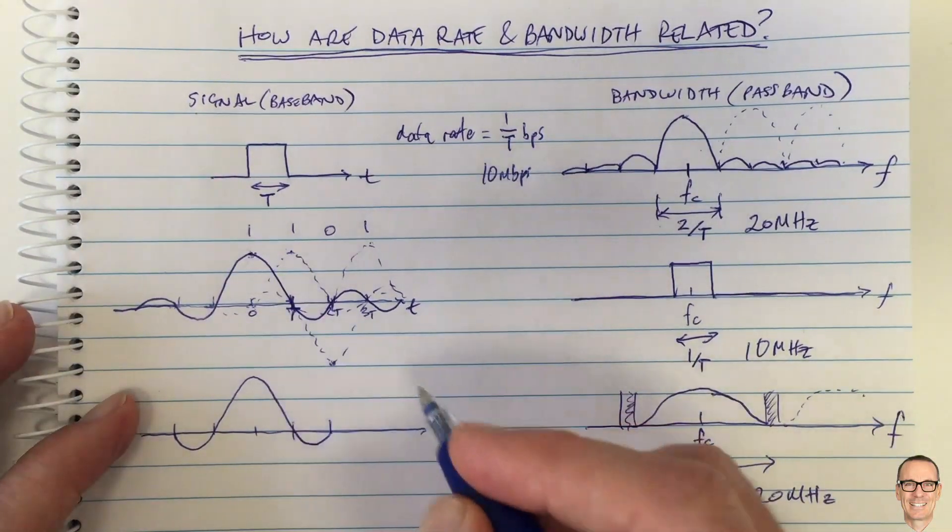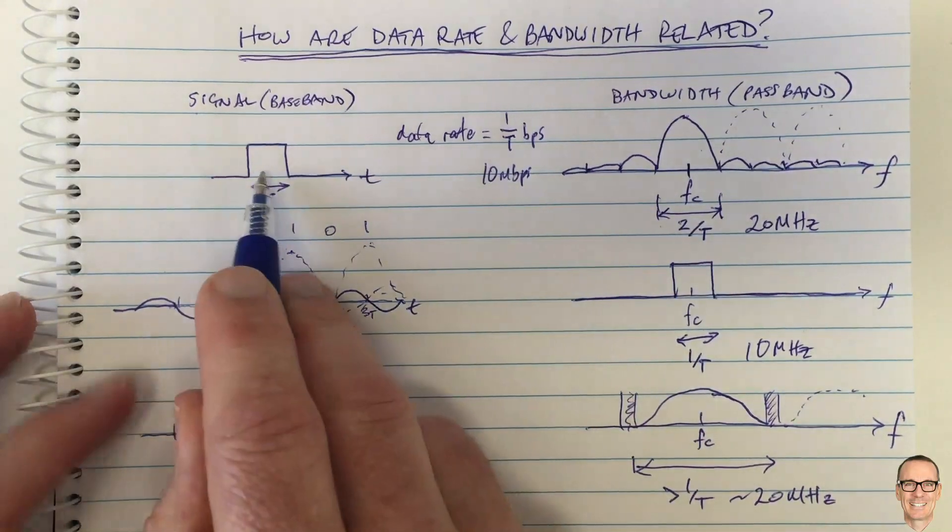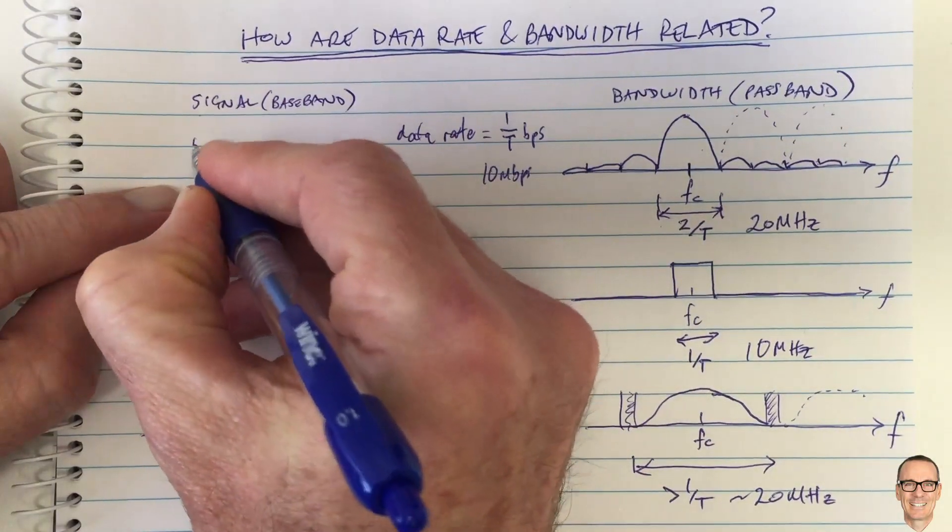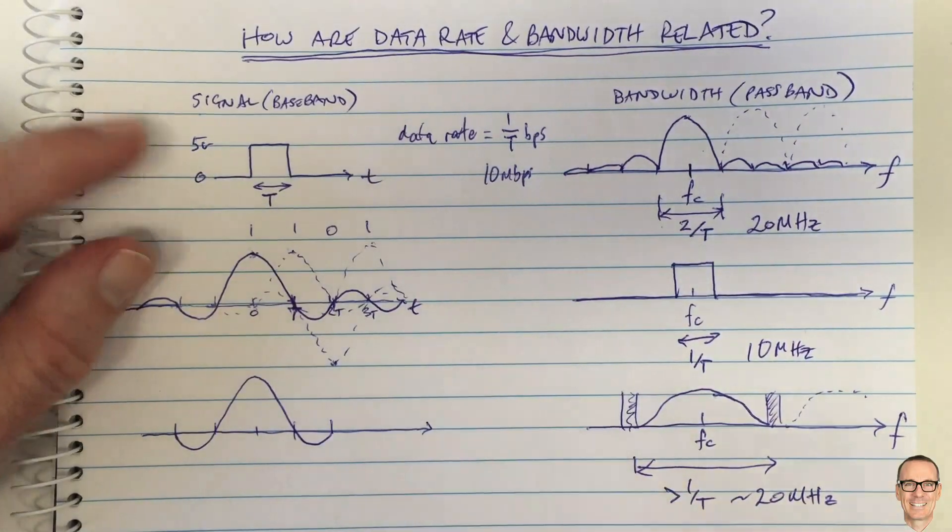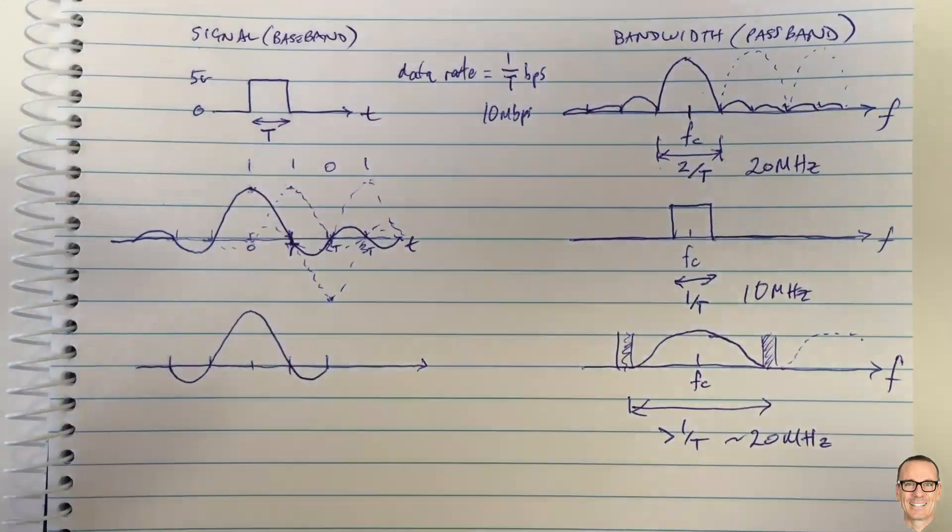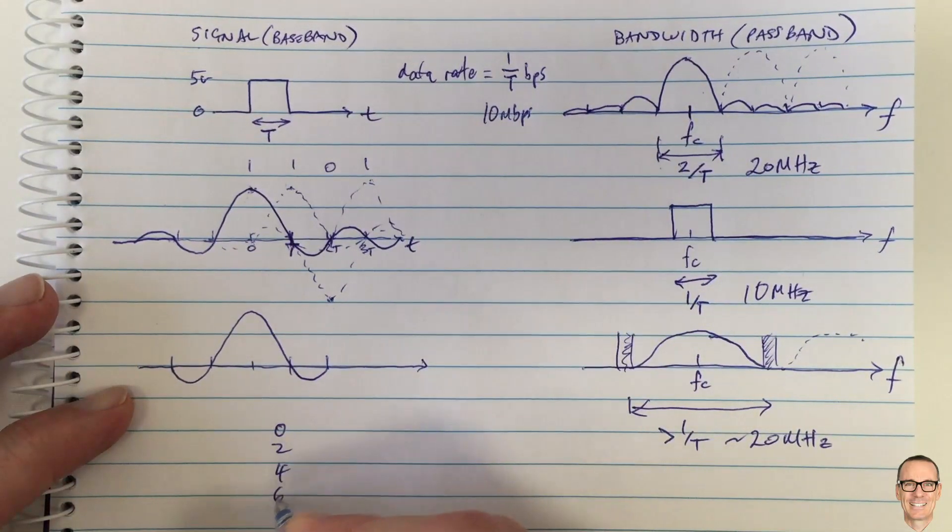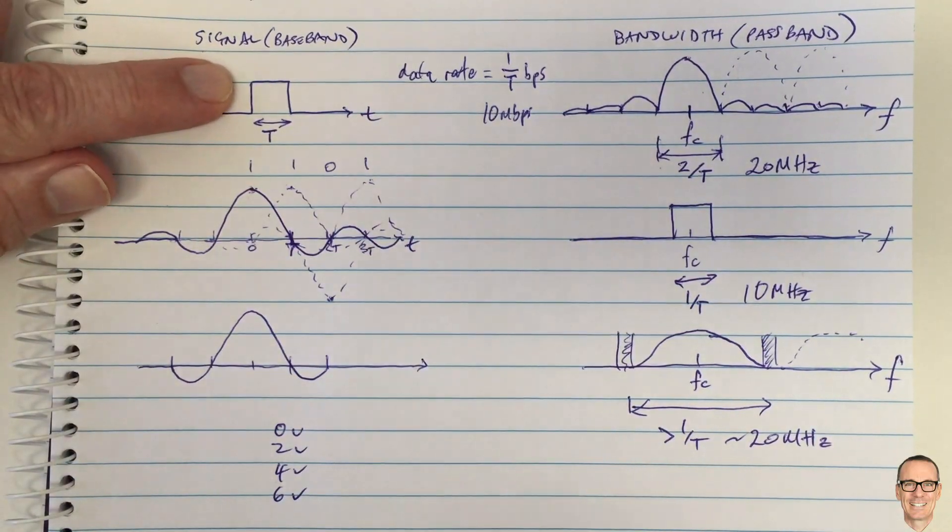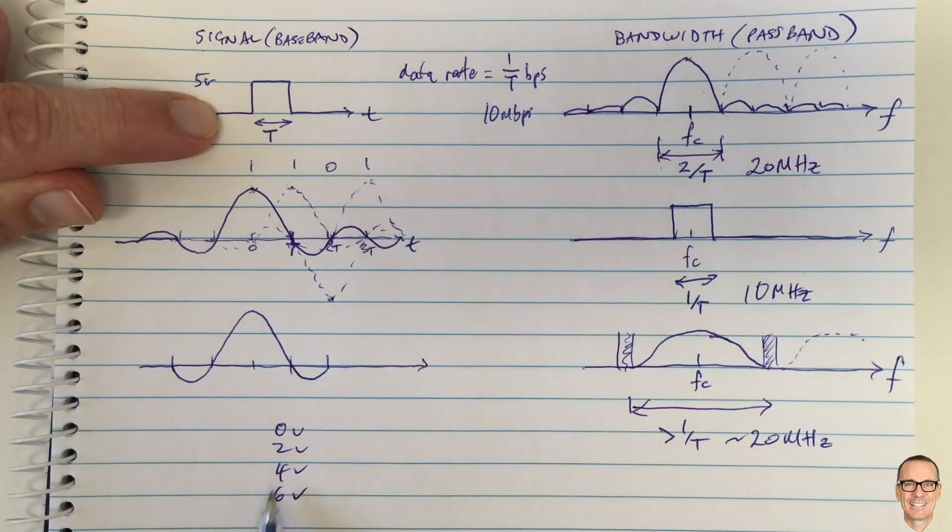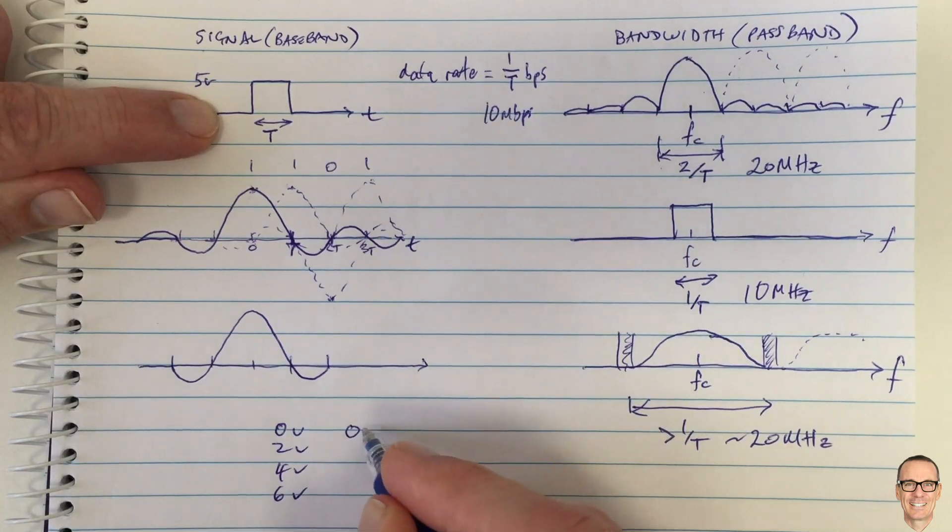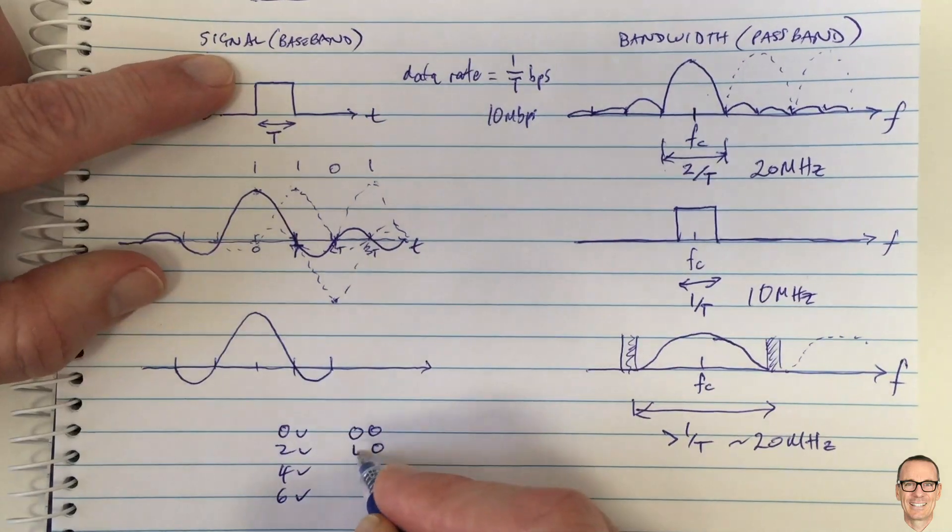For example, let's take this example here. Sometimes this is zero volts and five volts in some systems. We could have four levels, for example, let's say zero, two, four, and six volts. So we could have waveforms that look like this, but instead of just having a zero or a five volts, we could have zero, two, four, and six, in which case we could map them to two bits each: zero zero, zero one, one zero, and one one.